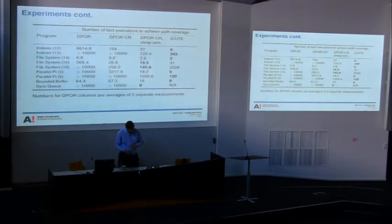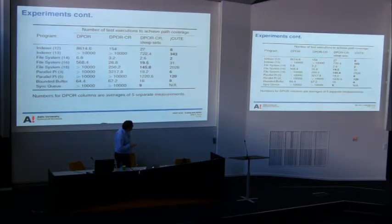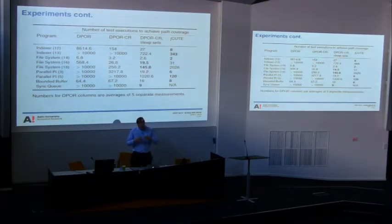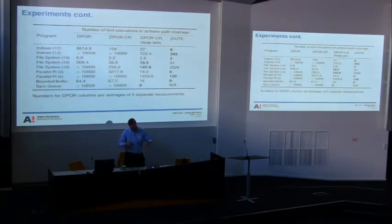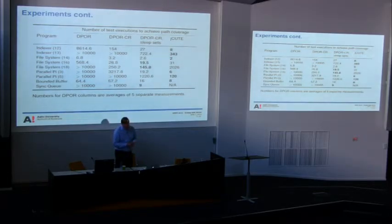Adding partial order reduction algorithms makes a huge difference for testing multi-threaded programs — without them, testing would likely not terminate for these examples. These tools are stateless, so a slightly larger execution tree at one level multiplies over deeper levels. It pays to be very careful early in the tree, because inefficiencies multiply over time.